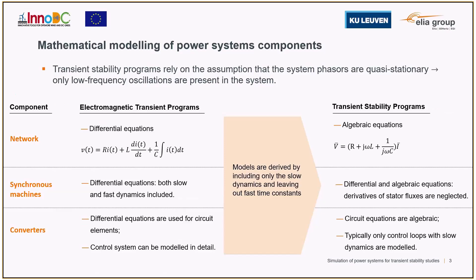In practical terms, models using transient stability programs are obtained by excluding some of the derivatives associated with fast dynamics, turning the differential equations into algebraic equations. Examples of mathematical models are provided for the network, the synchronous machines, and the converters.